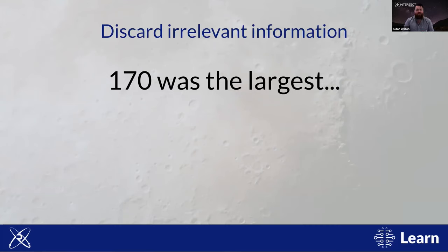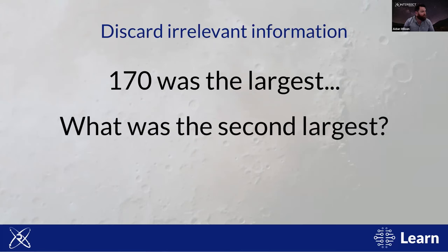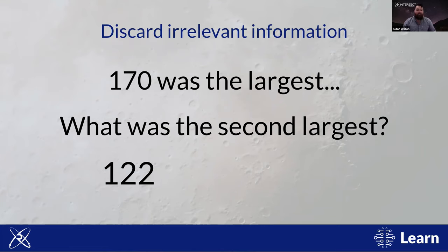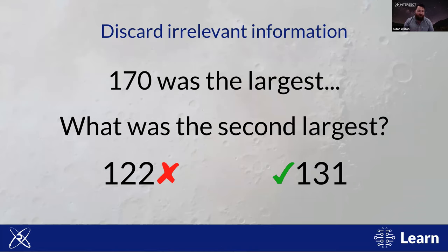To illustrate an important point about discarding irrelevant information: you probably figured out quickly that 170 was the largest, but do you remember what the second largest number was? You probably had a good idea that 122 was one of the higher numbers, and there was something in the 130s — in fact it was 131. 122 was memorable because for a while it was the largest so far and you were keeping it in memory. But once 170 was revealed, 131 was never remembered as the highest, so your brain likely discarded it immediately.